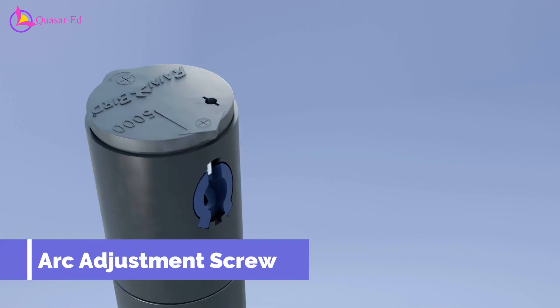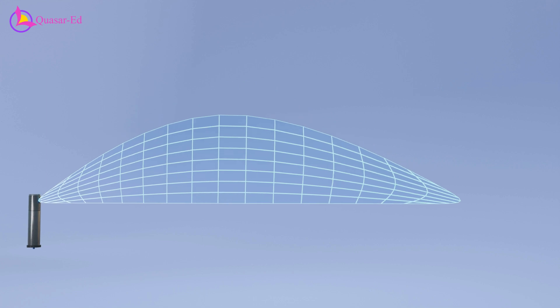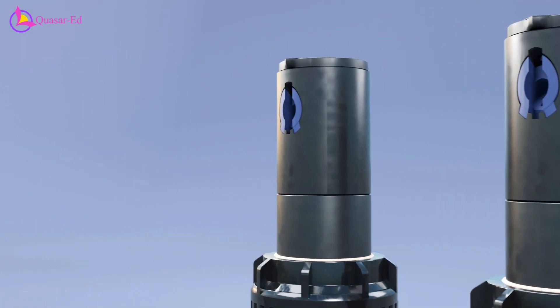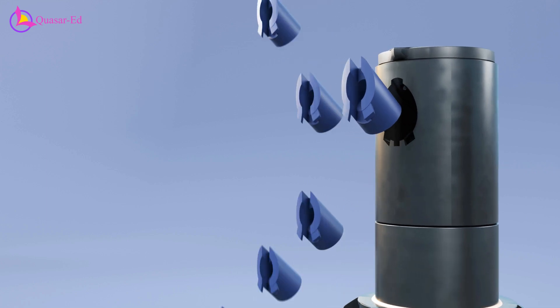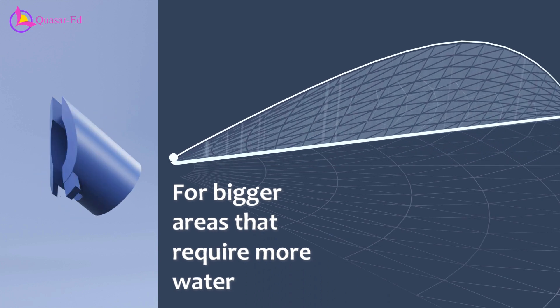The arc adjustment screw. This screw, located directly above the nozzle, simply obstructs the water spray to reduce the spraying arc and increase the distance. Rainbird and other brands of pop-up rotors come with multiple nozzles designed for different spray areas. Larger nozzles cover bigger areas with larger droplets.